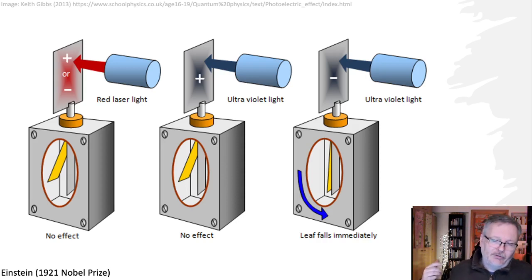And we can demonstrate, and late 19th century, early 20th century physicists did similar experiments, they didn't have lasers, but they could demonstrate that if you shone light, red light, on this electroscope, this charged electroscope, nothing would happen. It didn't matter if it was low level red light, or if it was really bright, intense red light, nothing would happen.